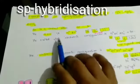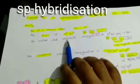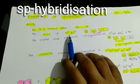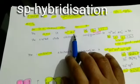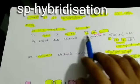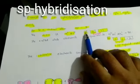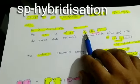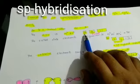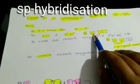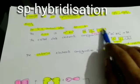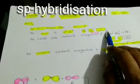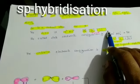The ground state electronic configuration of beryllium is 1s², 2s². That is, the 1s² orbital has 2 electrons and the 2s² orbital has 2 electrons. The p orbital is a vacant orbital in the ground state.